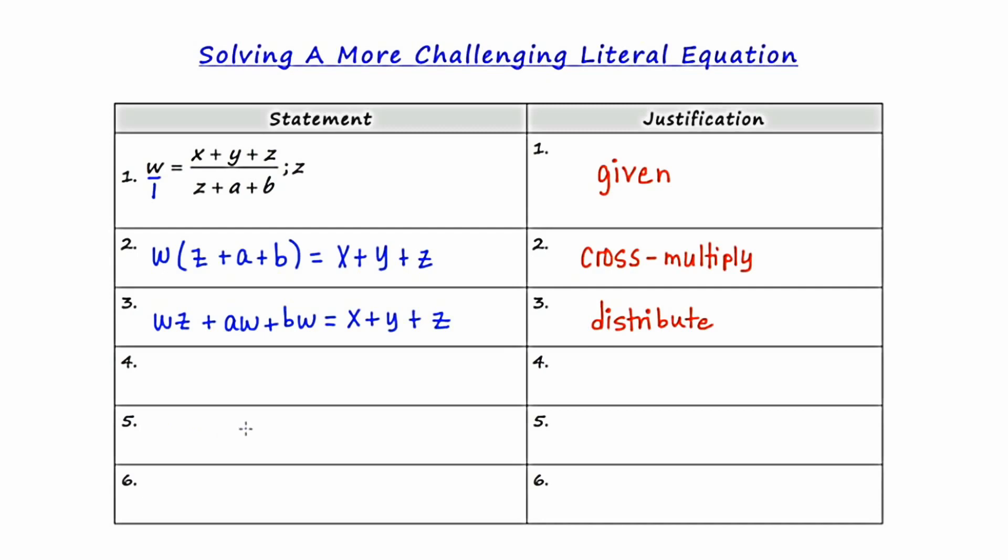Okay, to transition from step three to step four, we're going to do a really highly technical maneuver called having a Z party. And what I mean by that is any term that has a Z, I'm going to move to the left side, and any term that doesn't have a Z is going to go to the right side. So I call that having a Z party.